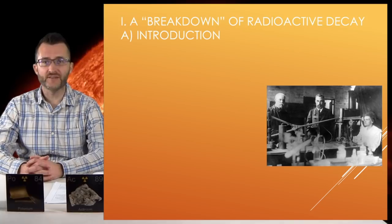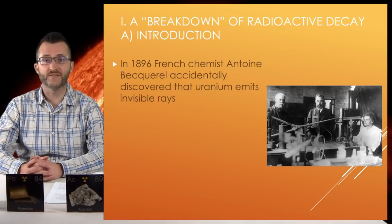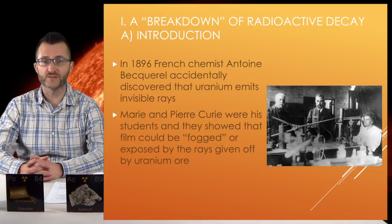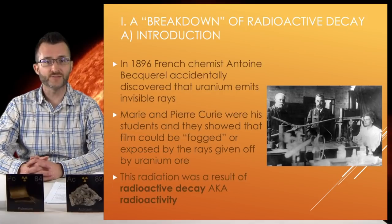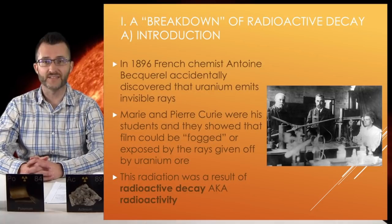A breakdown of radioactive decay. Introduction. In 1896, French chemist Antoine Becquerel accidentally discovered that uranium emits invisible rays. Marie and Pierre Curie were his students and they showed that film could be fogged or exposed by the rays given off by uranium ore. This radiation was a result of radioactive decay, a.k.a. radioactivity.